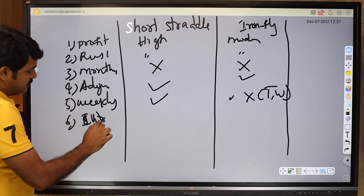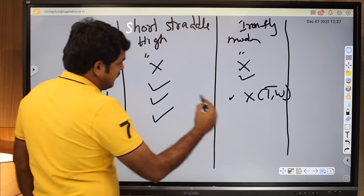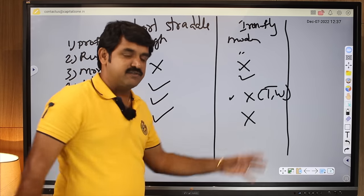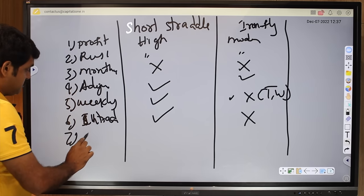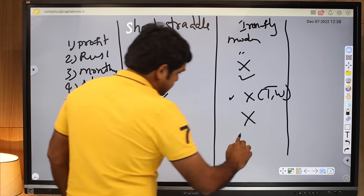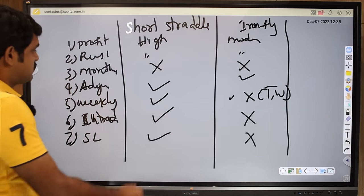And stop loss or else intraday: it works. And this doesn't work intraday, it doesn't give any profit at all. Iron fly, and stop loss model: it works, it doesn't work.